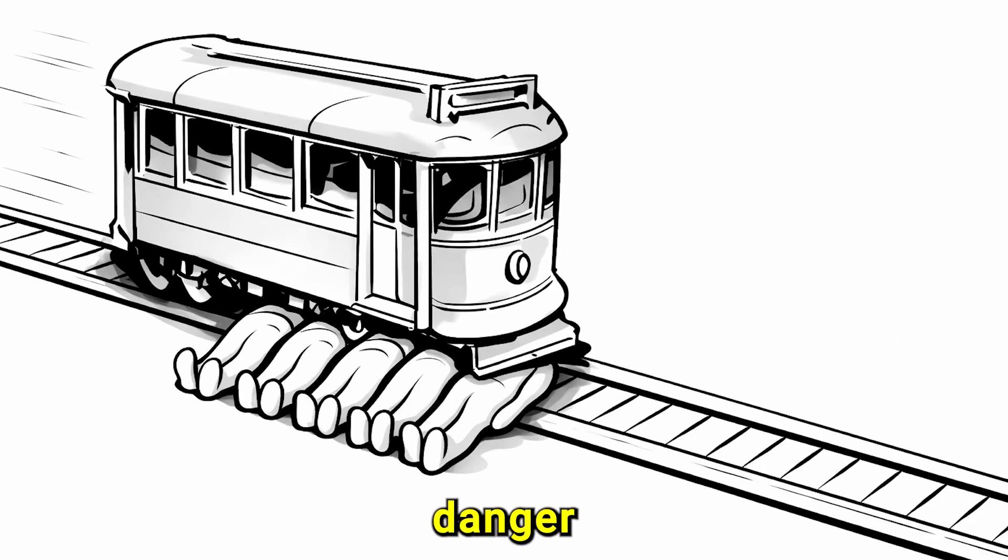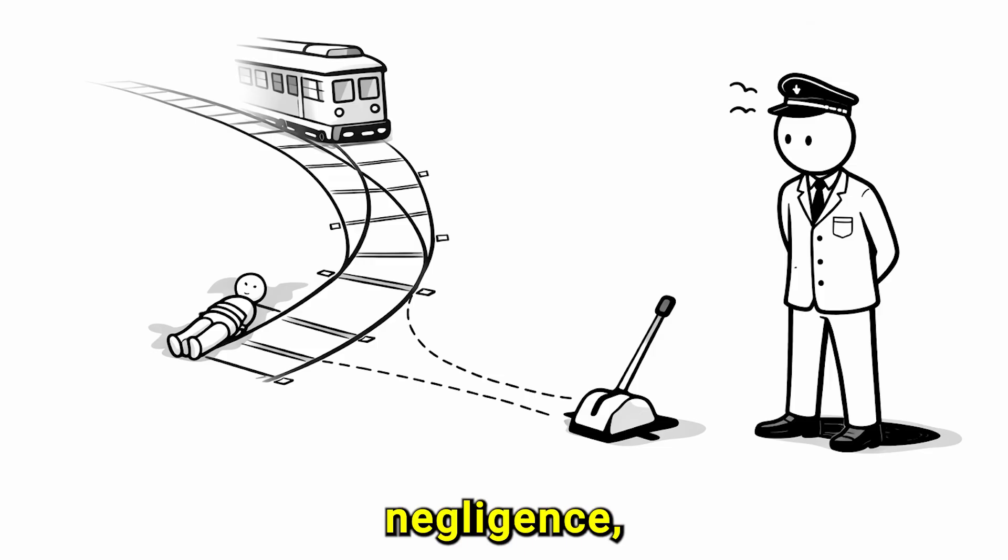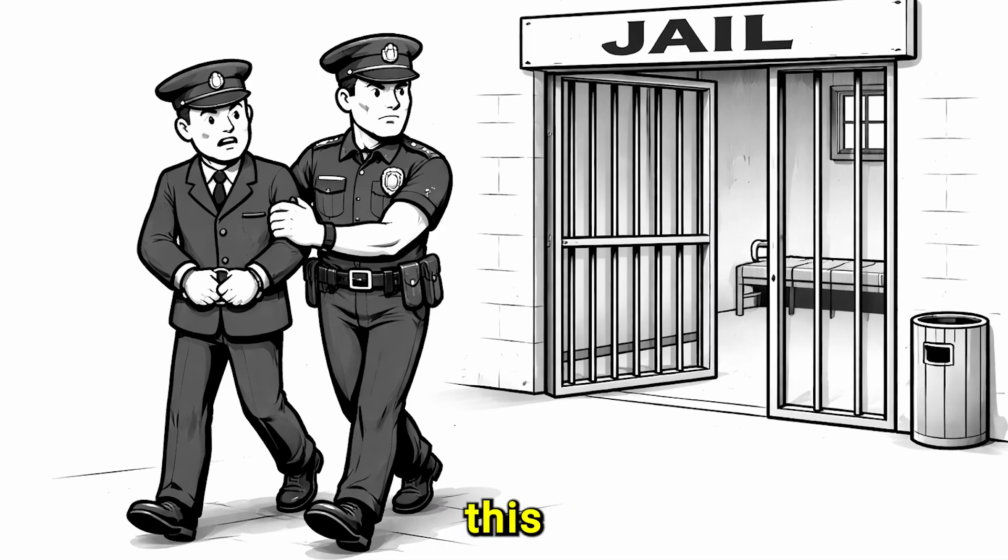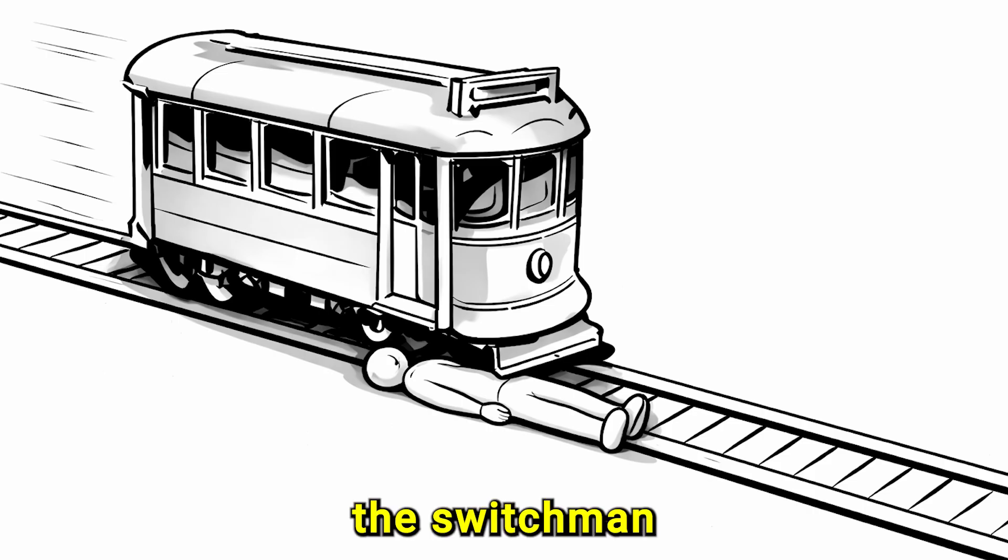If five people are in danger and the switchman does nothing, the law could call that negligence, failing to do your job when lives are at risk. In serious cases, this could lead to criminal charges such as manslaughter. But if the switchman pulls the lever and one person dies,